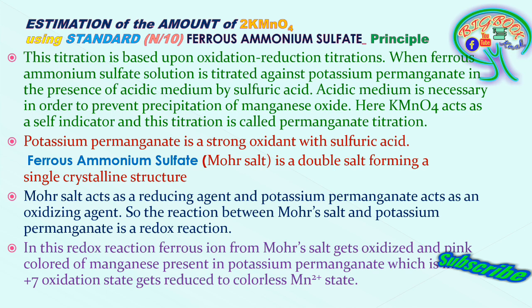In this redox reaction, the ferrous ion from Mohr's salt gets oxidized, and the pink color of manganese present in potassium permanganate — which is in the +7 oxidation state — gets reduced to the colorless Mn²⁺ state. This is the simplest way of explaining this particular reaction; as per the chemical formula the reaction is written in a more expanded form, but this captures the essential chemistry.